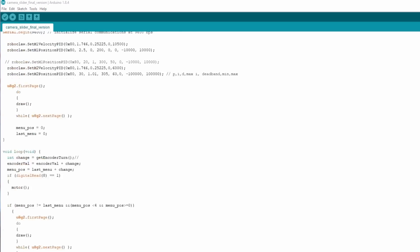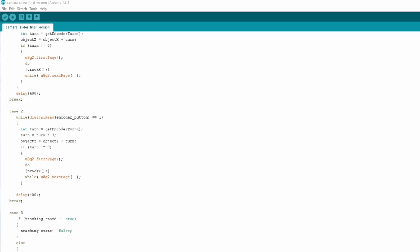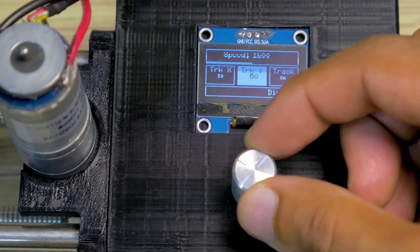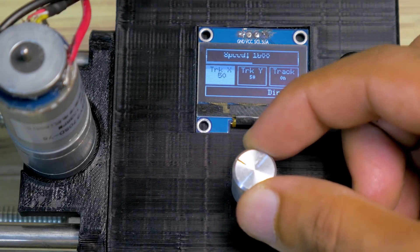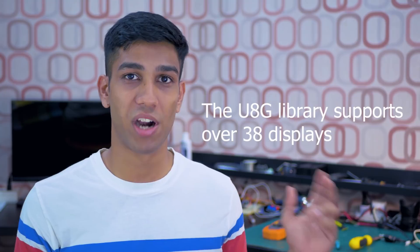Now let's talk about programming this object tracking camera slider. Programming was actually the hardest part of this project because from the start, I wanted this camera slider to be fully controllable and configurable through a built-in screen. I wanted my code to be compatible with as many screens as possible, so I had to use a U8G graphics library.